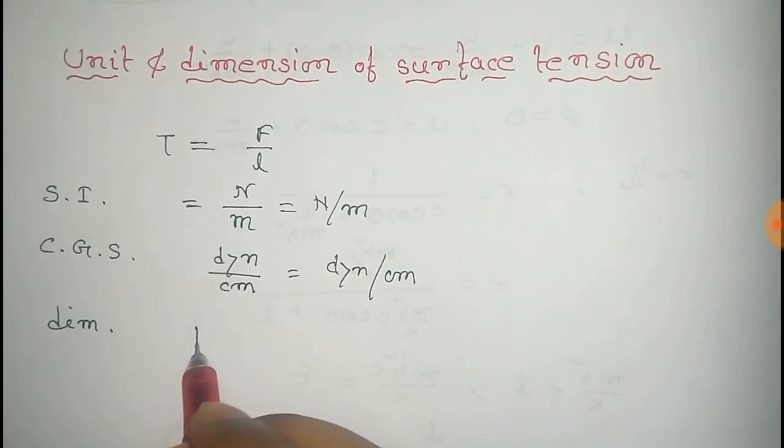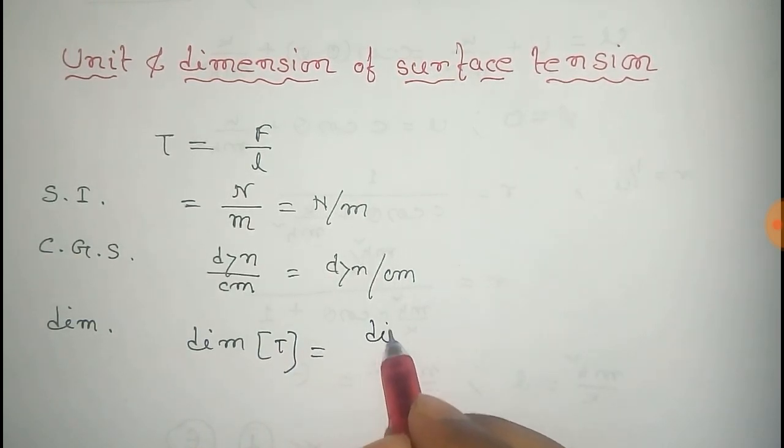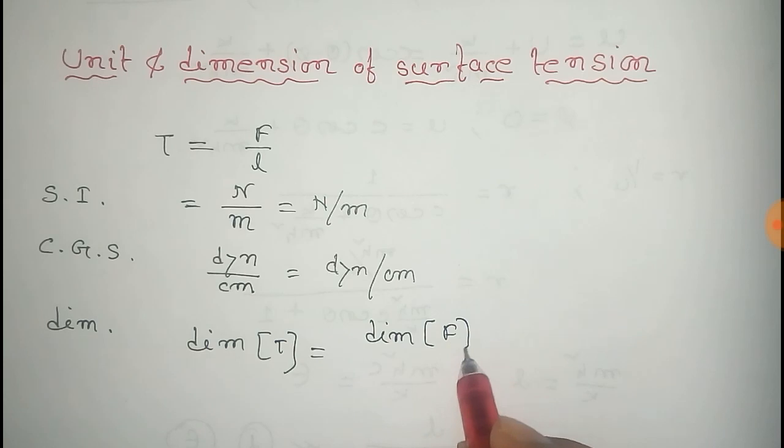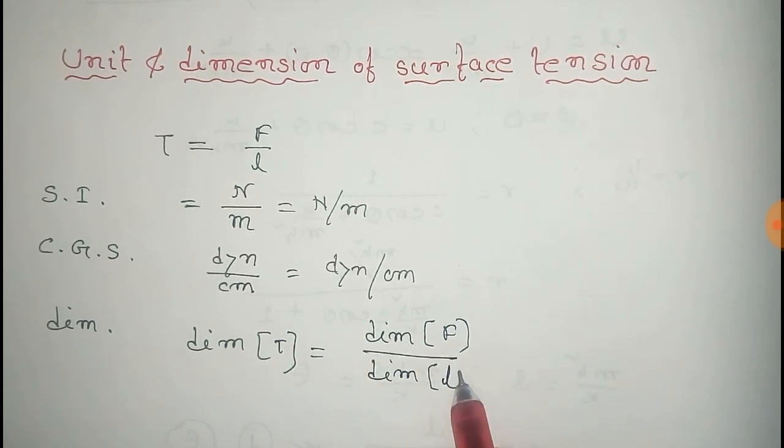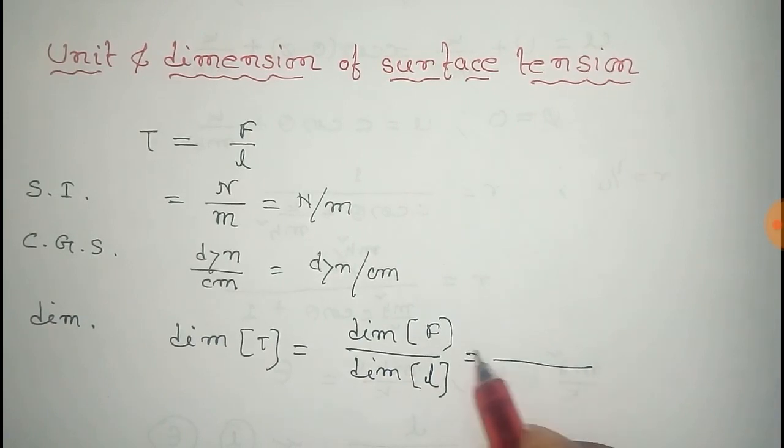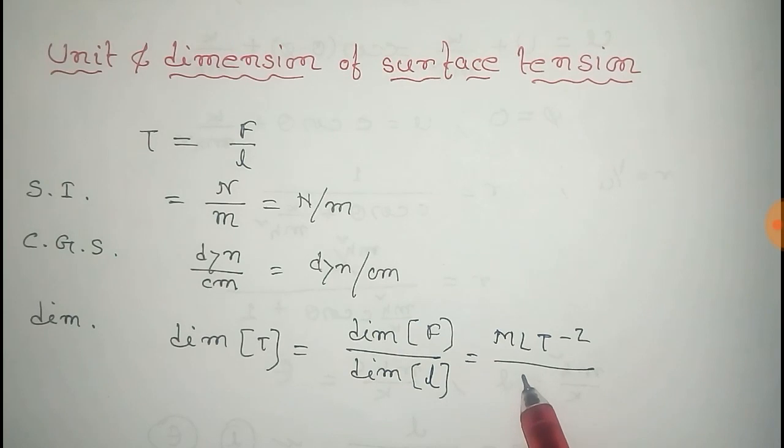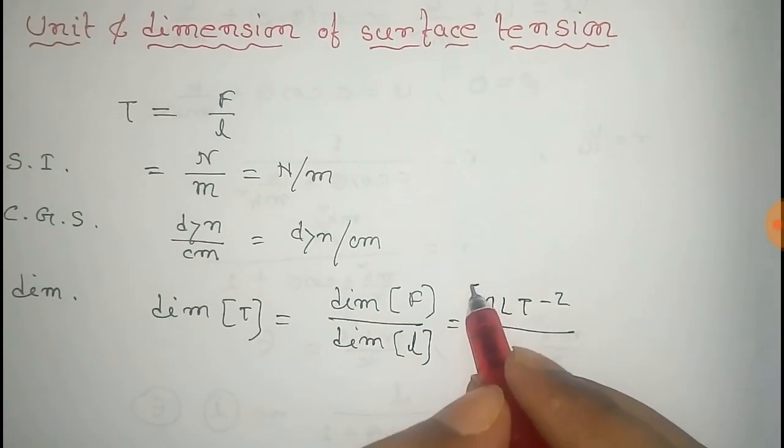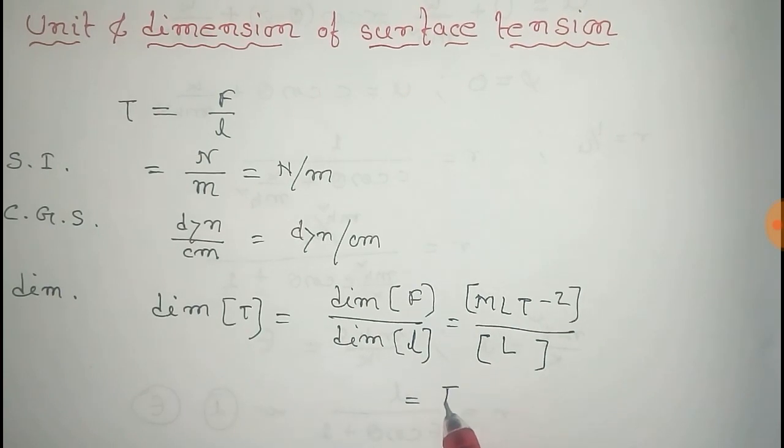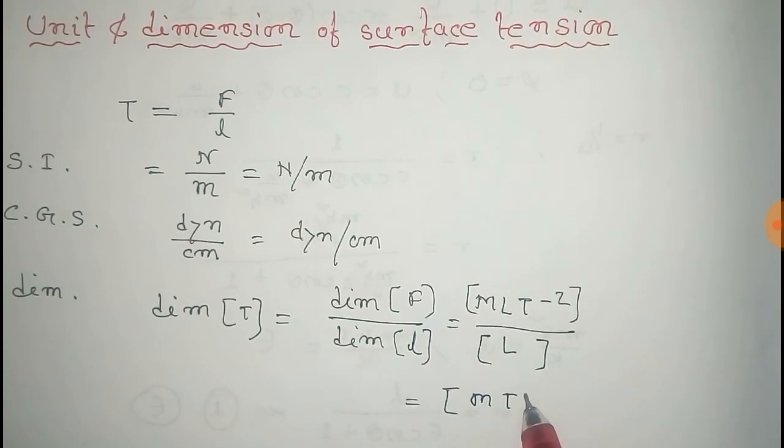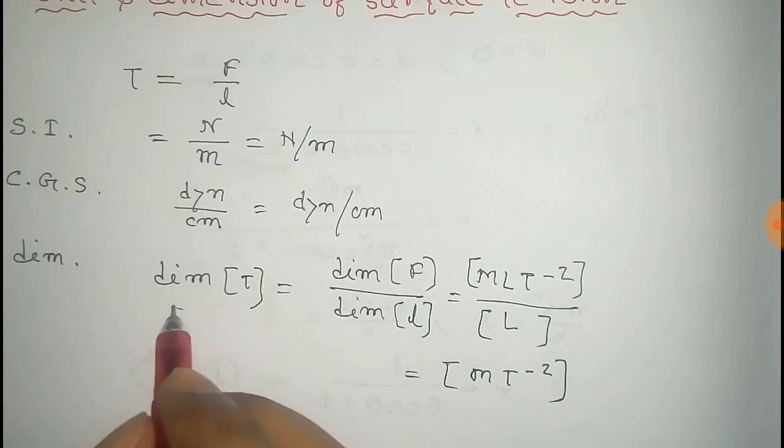So dimension of surface tension, that's equal to dimension of force divided by dimension of length. And dimension of force is M L T to the power minus two, dimension of length is L, so this equals to M T to the power minus two. This we get the dimension of surface tension.